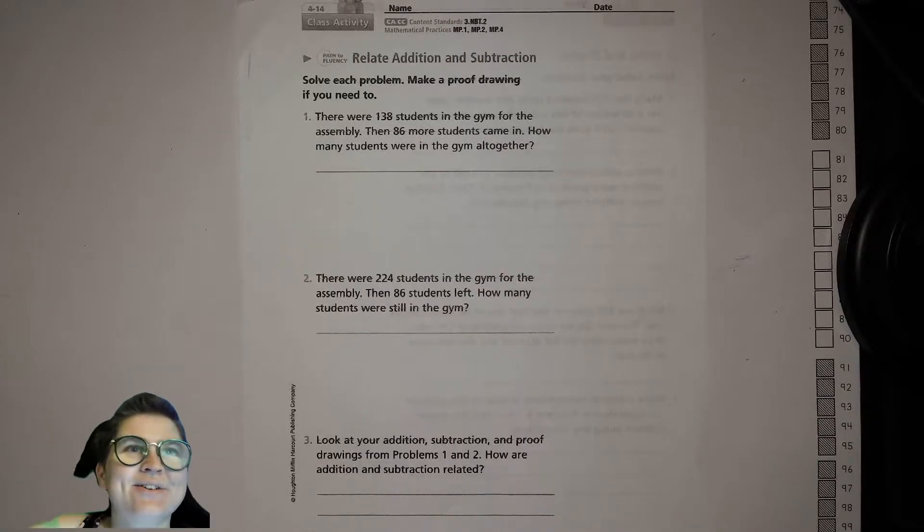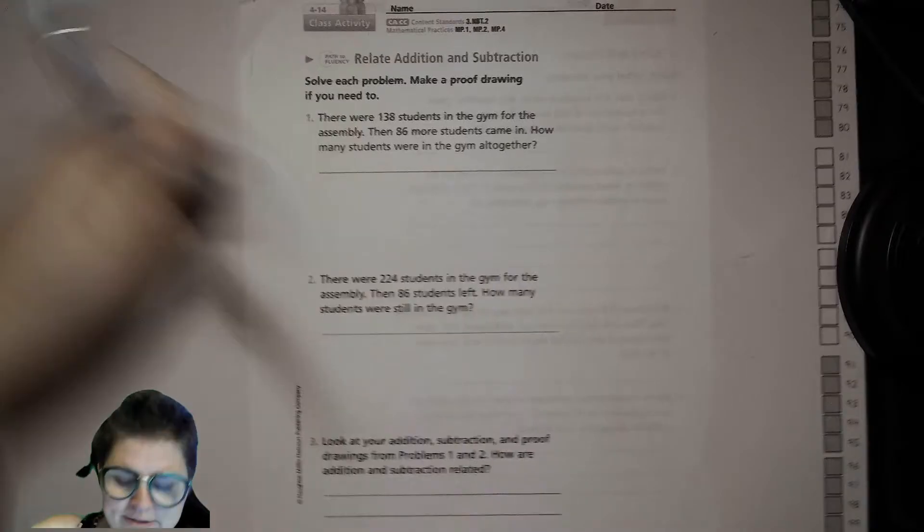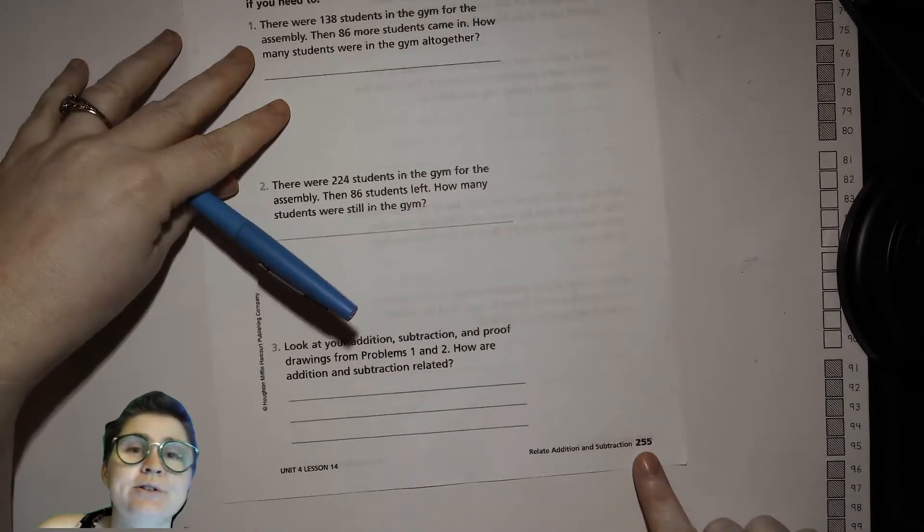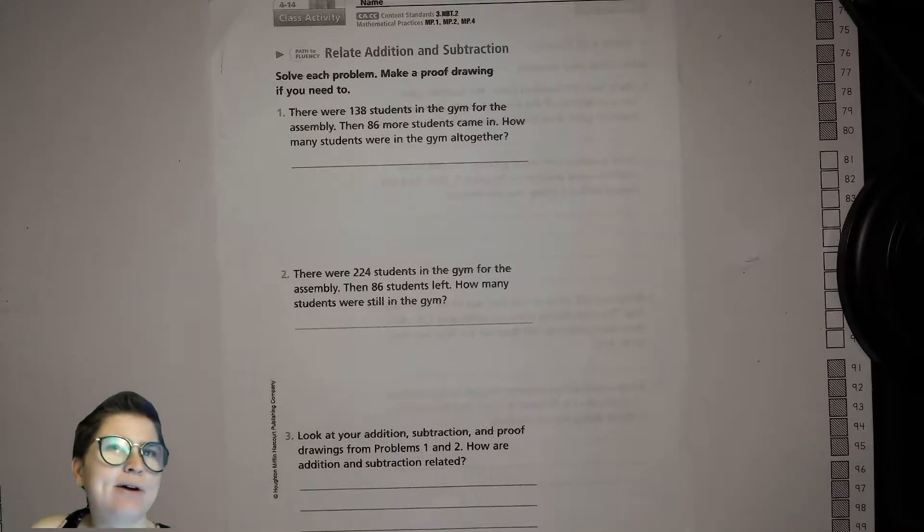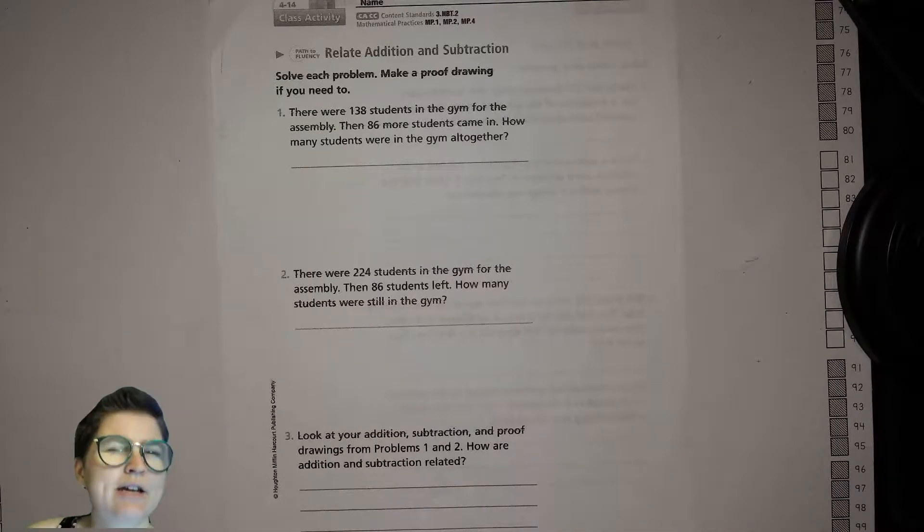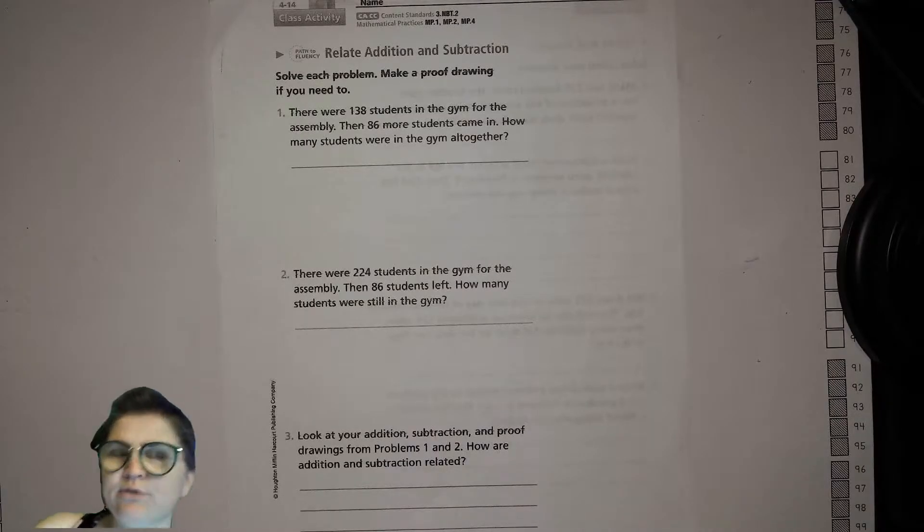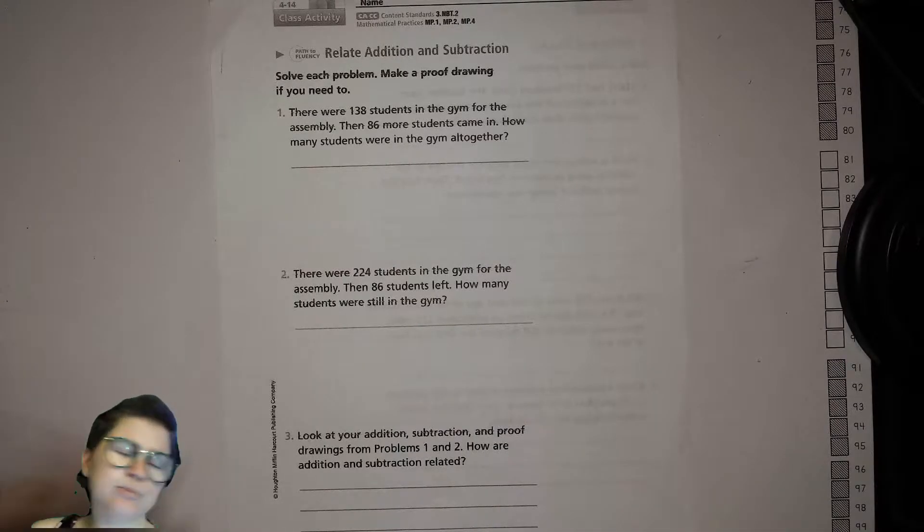Hey third graders, today we are doing unit 4 lesson 14, which is on page 255 of your math book. Today we're talking about the relationship between addition and subtraction. Think about that for a moment. In really simple terms, 1 plus 3 equals 4, 4 minus 3 equals 1.